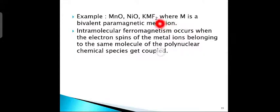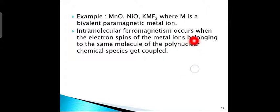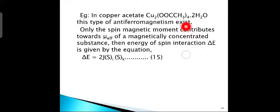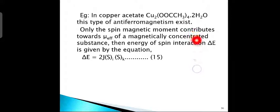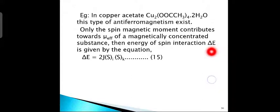Examples include manganese oxide, nickel oxide, and KMF₂ where M is a bivalent paramagnetic metal ion. Intramolecular ferromagnetism occurs when the electron spins of the metal ions belonging to the same molecule of a polynuclear chemical species get coupled. In copper acetate, Cu₂(OOC·CH₃)₄·2H₂O, this type of anti-ferromagnetism exists. Only the spin magnetic moment contributes towards μ_eff of a magnetically concentrated substance, and the energy of spin interaction ΔE is given by ΔE = J·Sᵢ·Sₖ (equation 15).